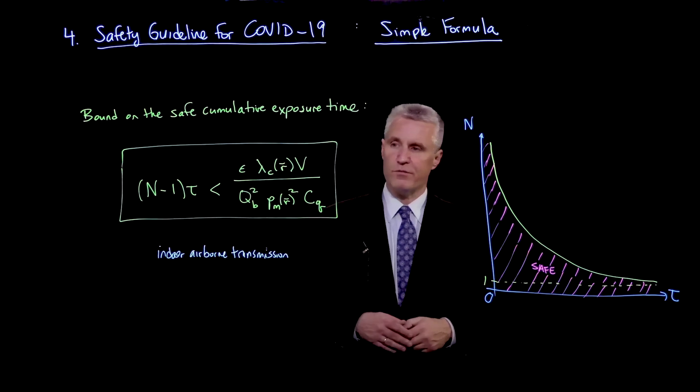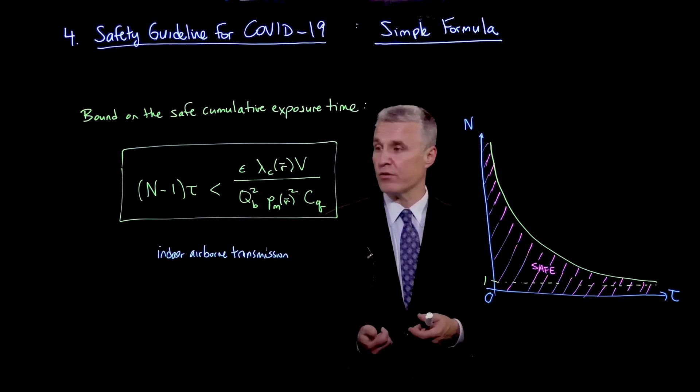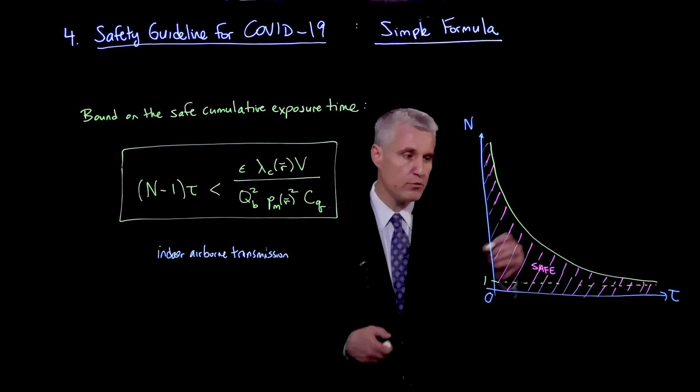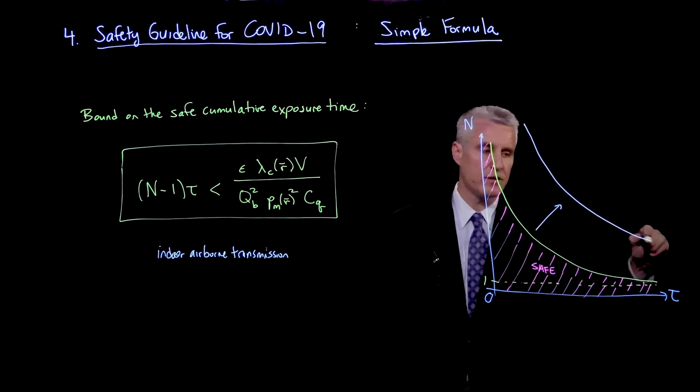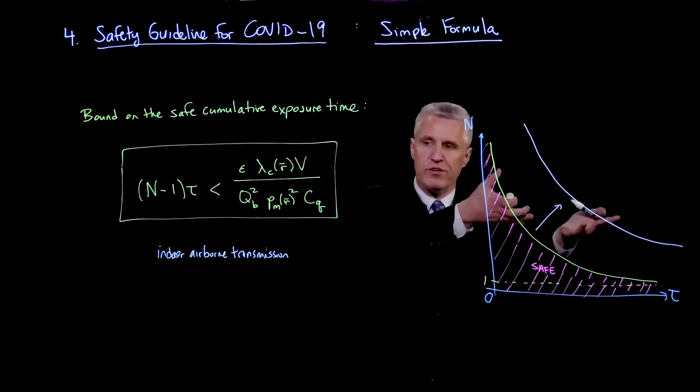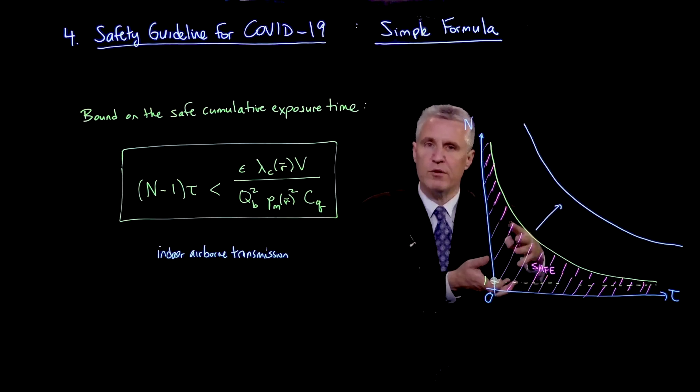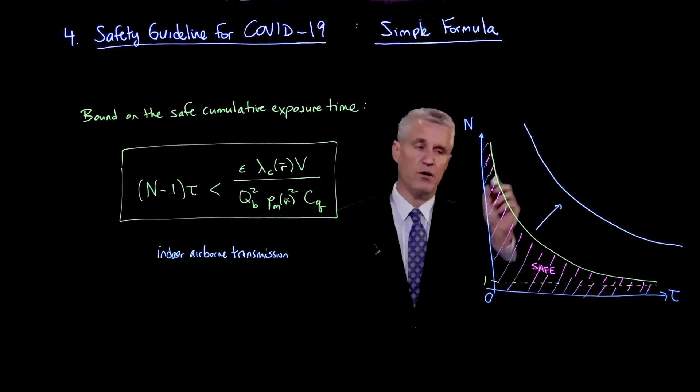What's nice about this formula is it allows you to immediately see the effects of the scaling, some of which we've already talked about before. So if we would like to move it in this direction, obviously we would like the curve to be up here somewhere. So this is making the room more safe. If I can push it in this direction, I can either get more people or more time or whatever combination of that I'd like. How can I get there?